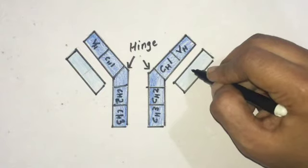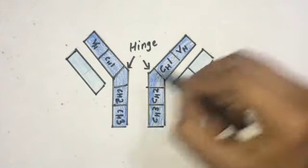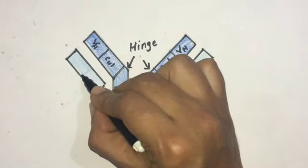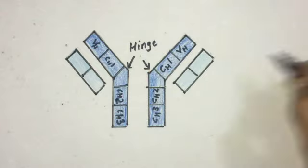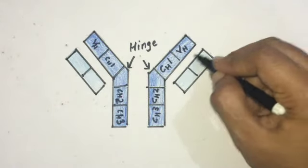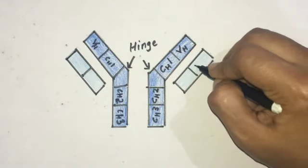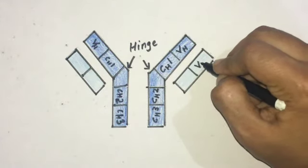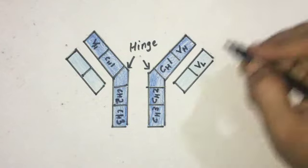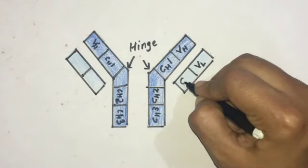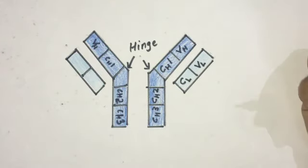This is the light chain. It is also subdivided into two parts: this is the variable region in the light chain, named VL (L for light), and this is the constant region.